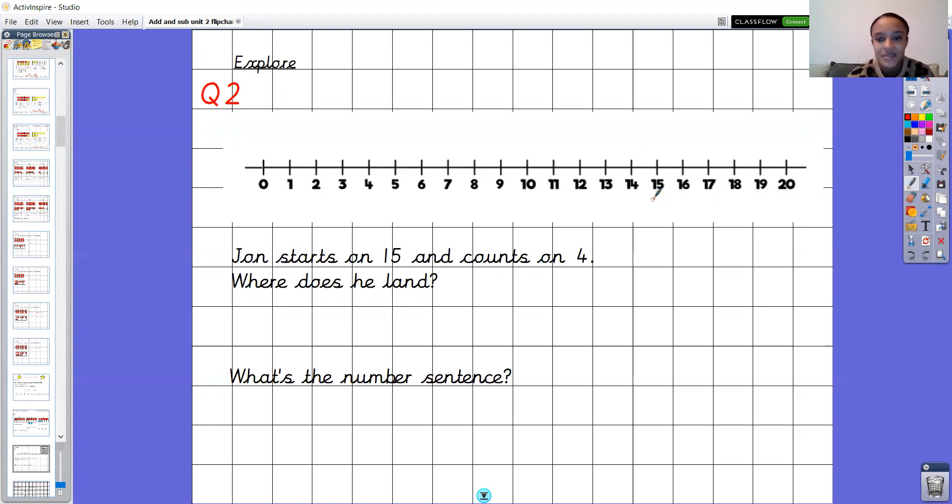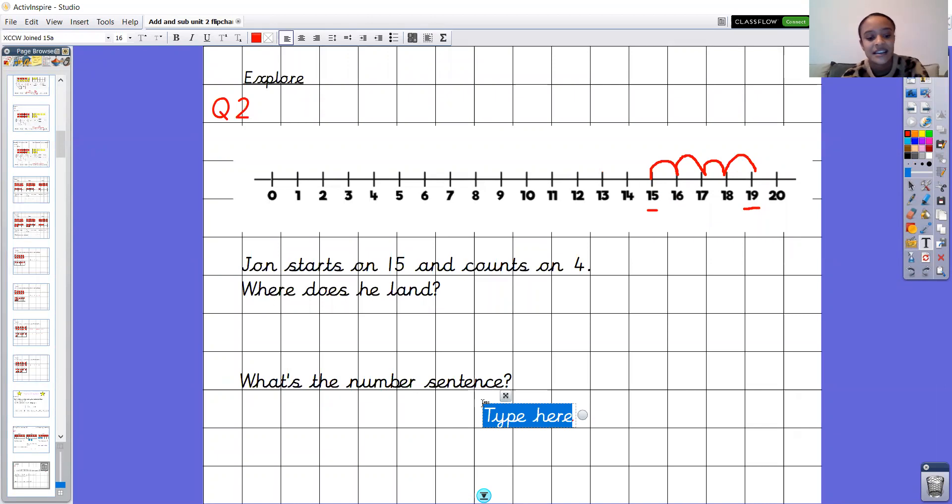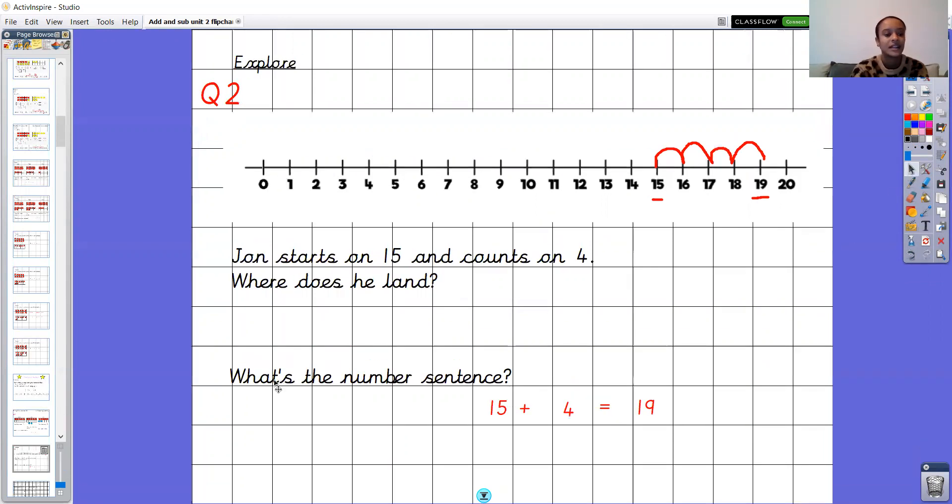Fantastic okay so he starts on the number 15 and he counts on four. Are you ready to count with me? Okay one, two, three, four. What has he landed on? 19. So what's our number sentence? Our number sentence is 15 add four equals 19. Brilliant.